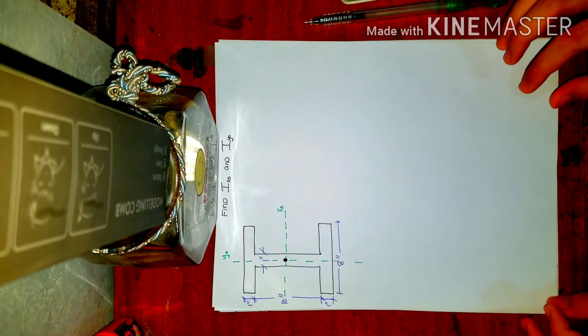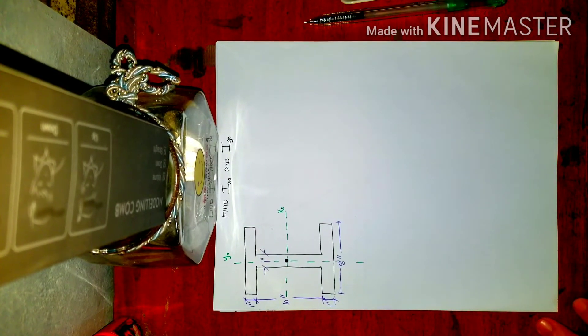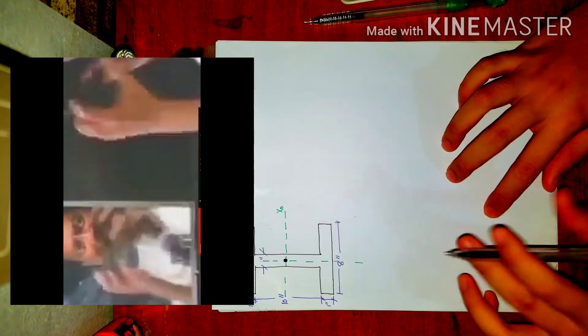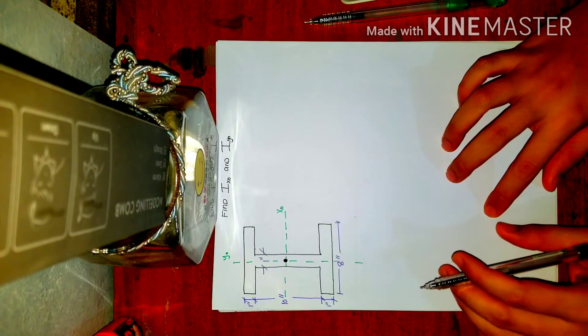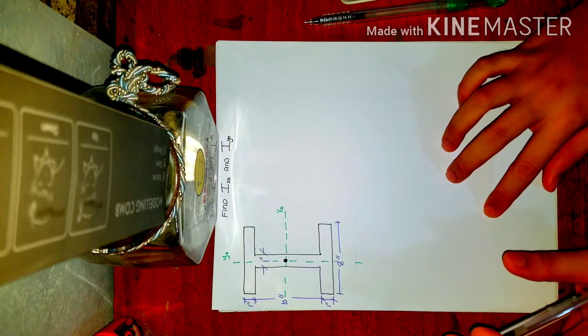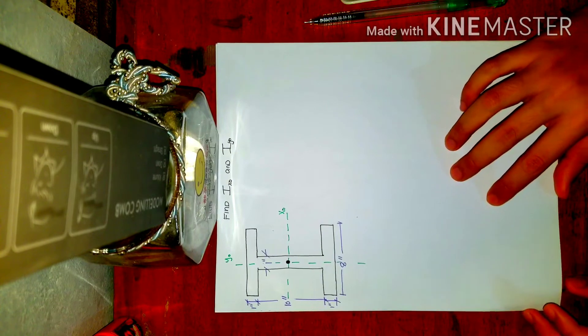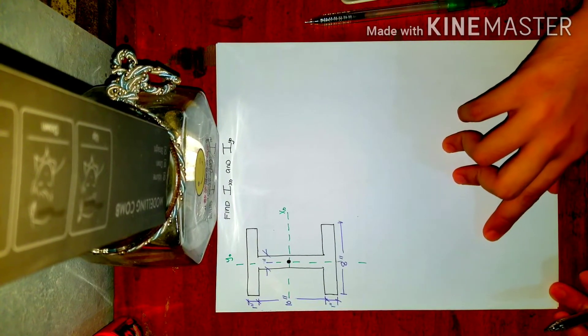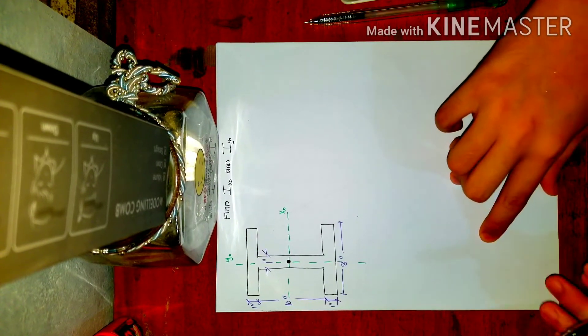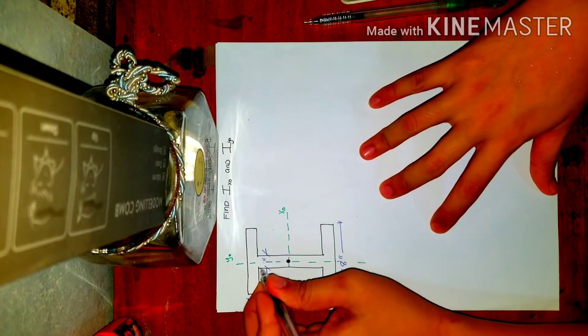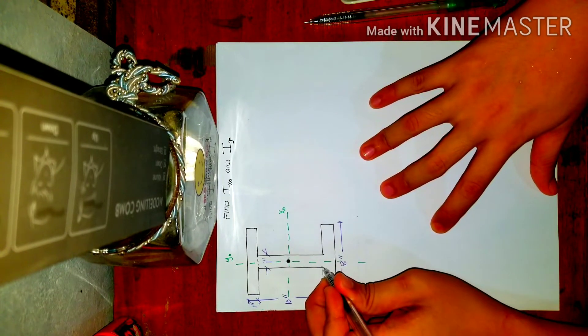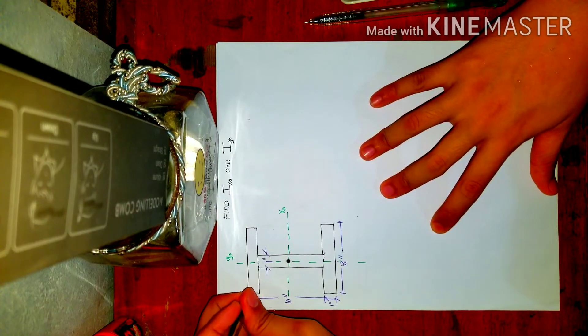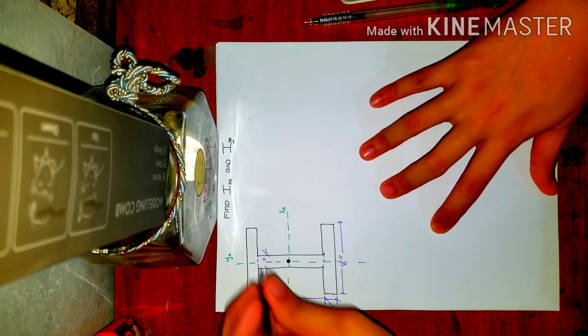Next, what we're going to do is divide our composite section into three parts. There are two approaches here. Let me first show you the normal method that a student does. They divide this into three rectangles. So this is the first rectangle.